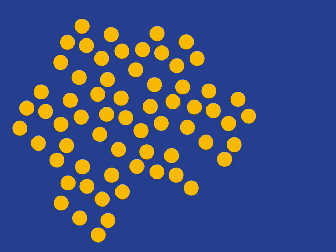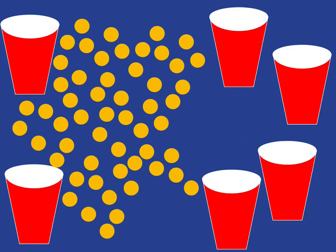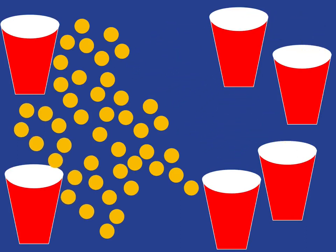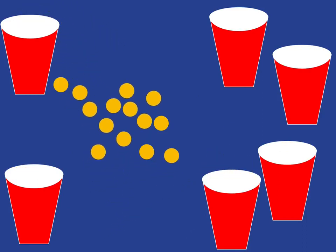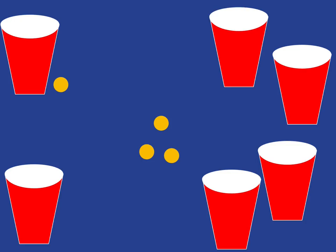If I were to ask you how many counters you can see here, it'll probably take you quite a bit of time to work it out. However, if I start grouping those counters into groups of 10 and popping each of the groups of 10 into a container, it'll be easy for you to see that there are 10, 20, 30, 40, 50, 60, 4 counters.